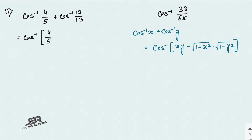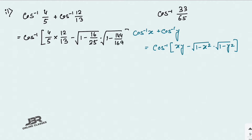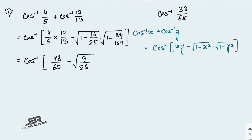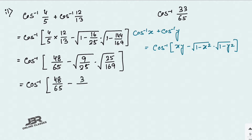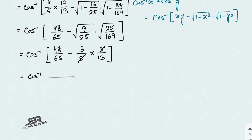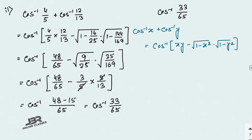Applying the formula: cos⁻¹(4/5 · 12/13 − √(1−16/25)·√(1−144/169)) = cos⁻¹(48/65 − √(9/25)·√(25/169)) = cos⁻¹(48/65 − 3/5 · 5/13). The 5s cancel out giving 3/13, and 48/65 − 15/65 = 33/65. So cos⁻¹(33/65), which equals the right-hand side. Proved.